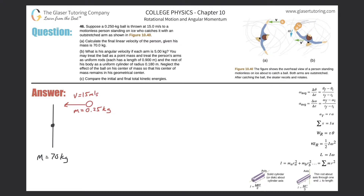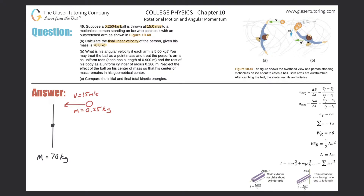Problem 46: a 0.25 kilogram ball is thrown at 15 meters per second to a motionless person standing on ice, who catches it with an outstretched arm. Part A asks us to calculate the final linear velocity of the person, given his mass is 70 kilograms. Here's the person with outstretched arms, the center of mass, and the ball traveling at 15 meters per second.